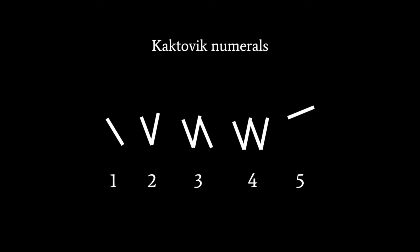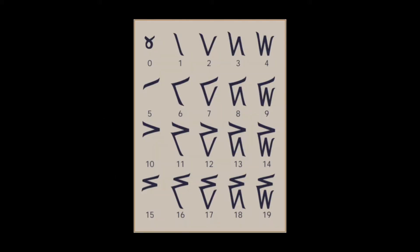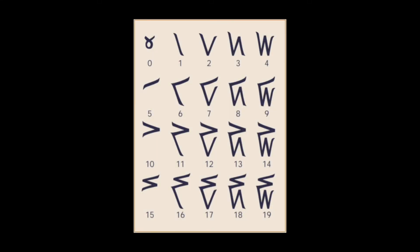It starts with a diagonal line down. Two would be a diagonal line down followed by a diagonal up. This continues all the way to four. Five is placed above and is a diagonal as well. This continues all the way to 19, and for 20, since it is base 20, you would start a new line.